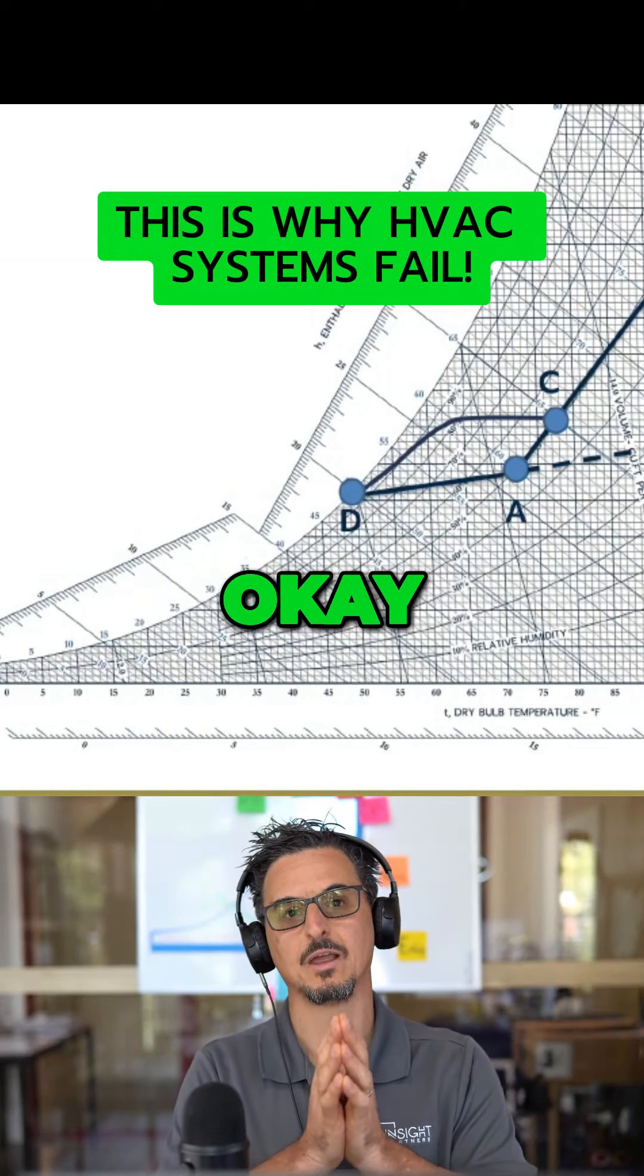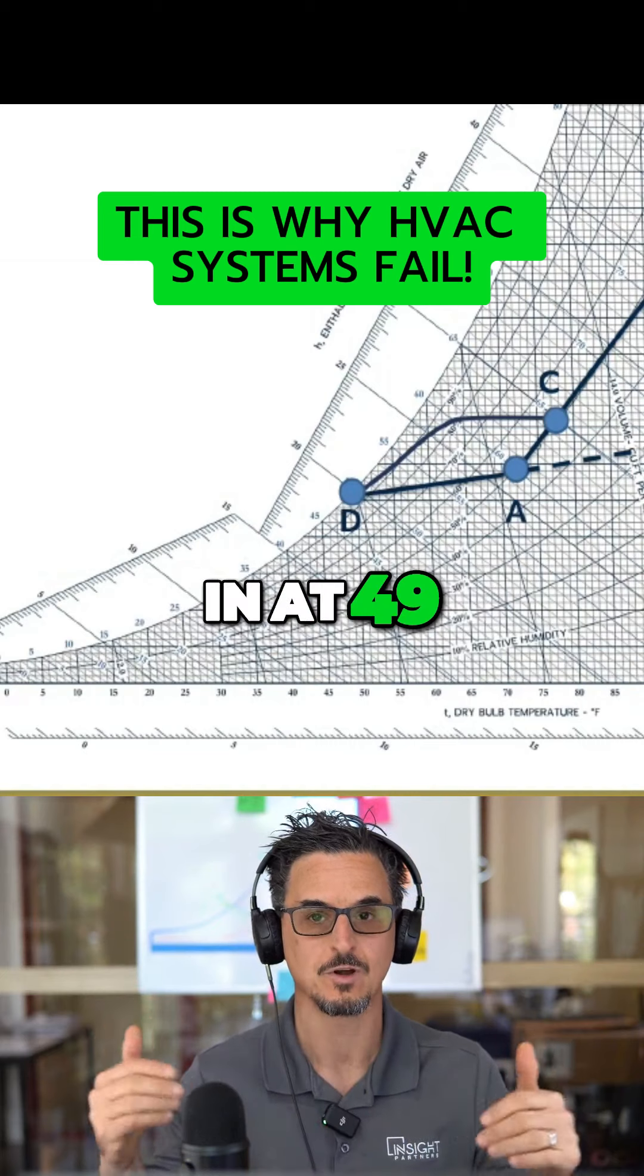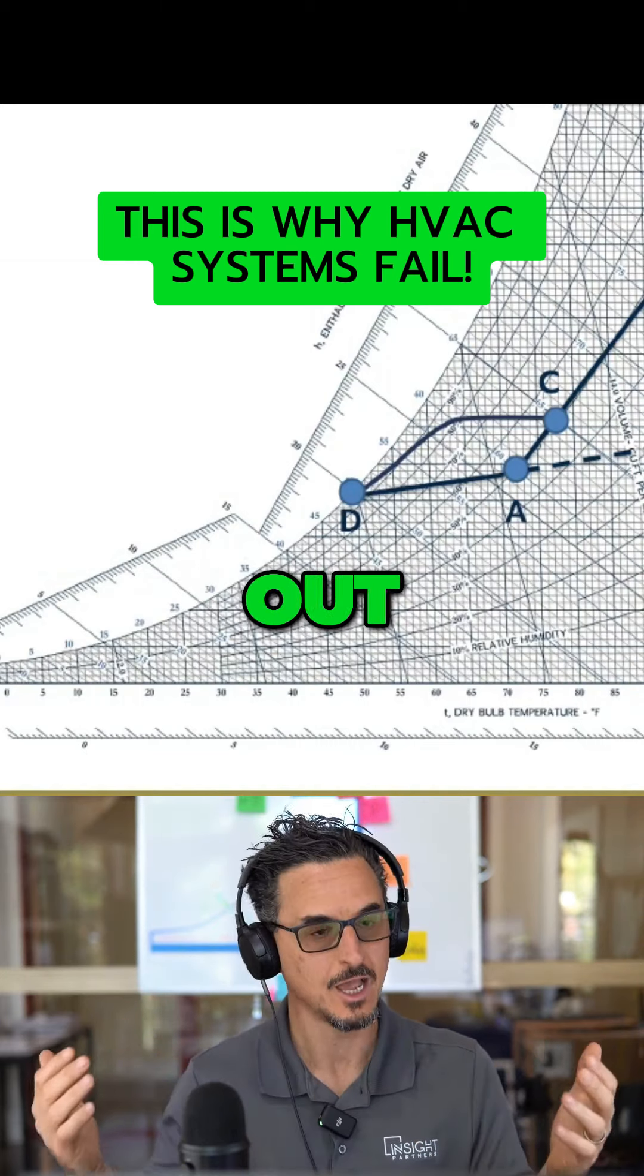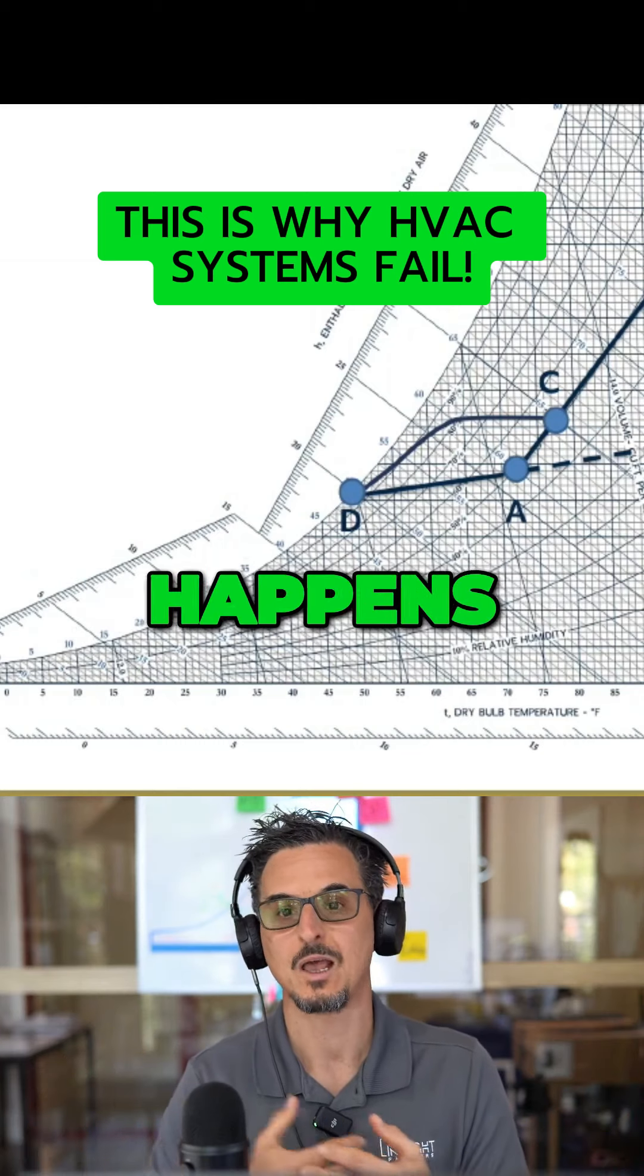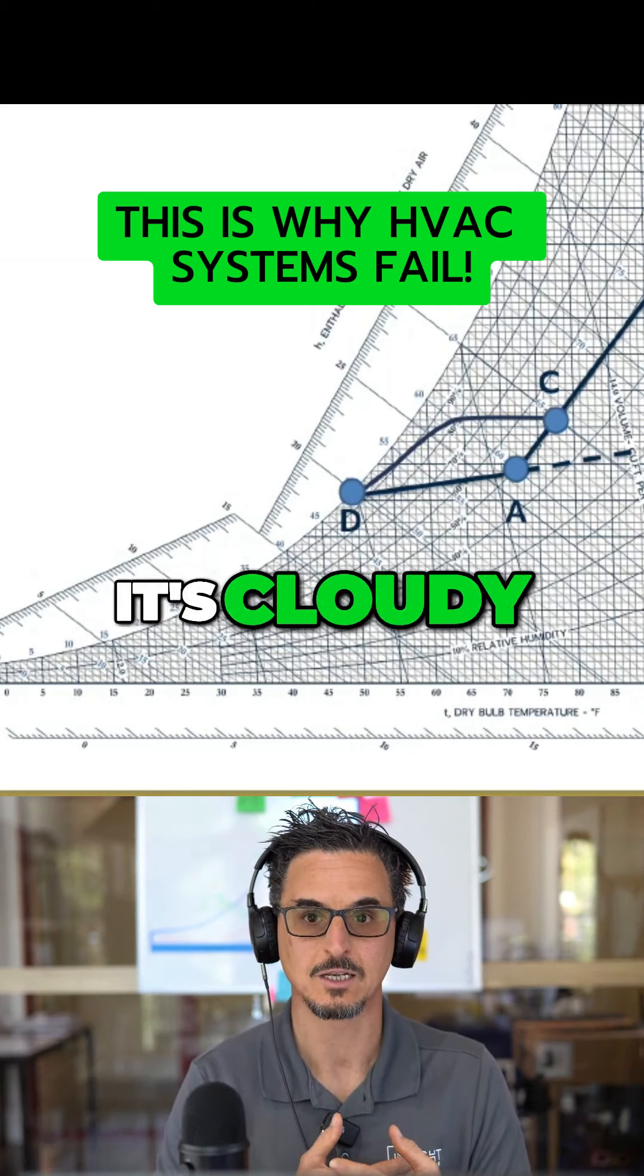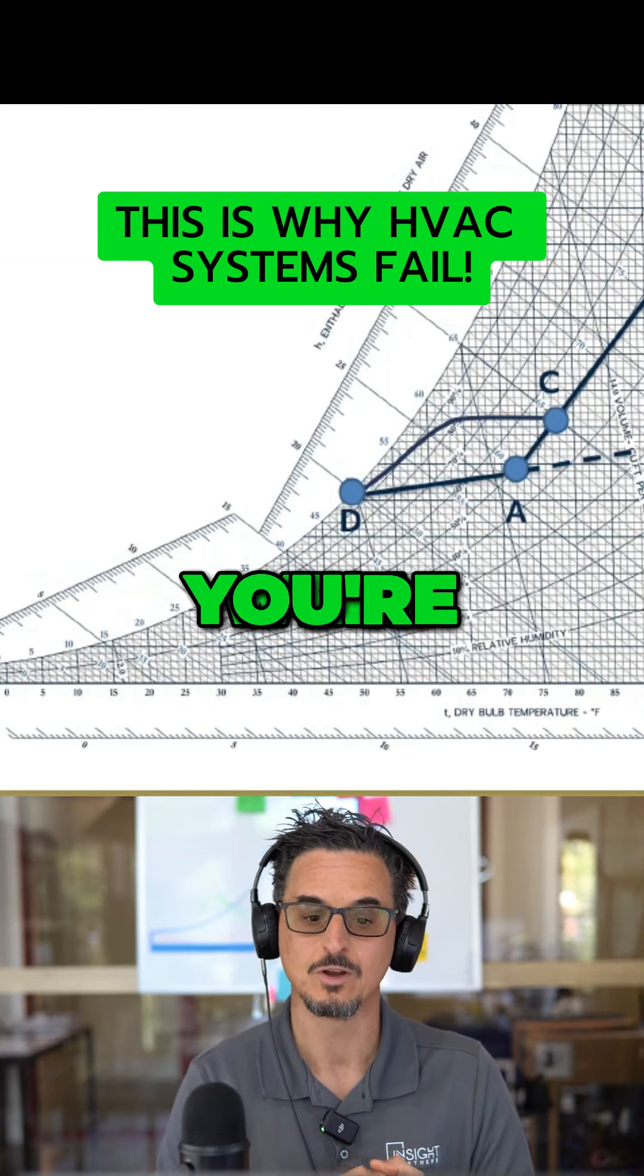So what happens in the real world? You're in the space, 3200 CFM is coming in at 49 degrees. It's sunny out, it's hot, it's fully loaded, everybody's fine. What happens on the day when it's cooler outside, it's cloudy, there's not as many people in there, and it's still providing 49 degrees? Well, you're going to over-cool the space, right?